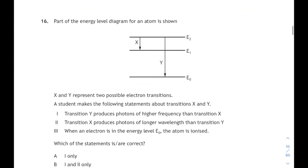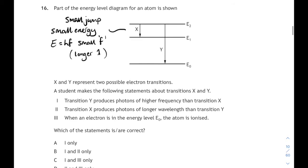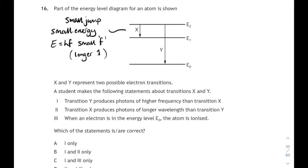2 watts per square meter corresponds to answer C. Question 16, this is energy levels in an atom. X and Y represent 2 possible electron transitions. We have to state which statements is or are correct. Remember, small jumps, small energy difference. So that's a small frequency of photon. So a longer wavelength of photon will be emitted. Let's look at the statements.